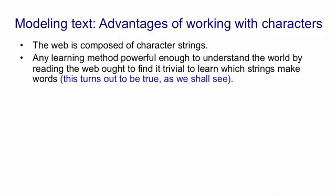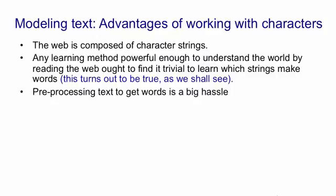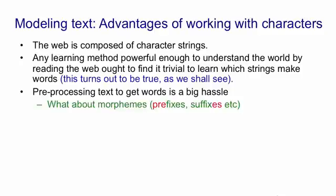So we're going to be very ambitious here. We want something that will read Wikipedia and understand the world. If we have to preprocess the text in Wikipedia into words, it's going to be a big hassle. There's all sorts of problems. The first problem is morphemes. The smallest units of meaning, according to linguists, are morphemes. So we're going to have to break up a word into these morphemes if we want to deal with it sensibly.